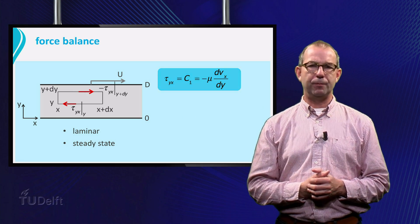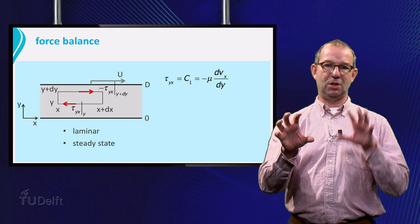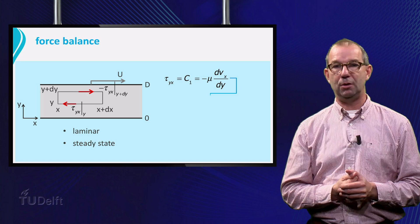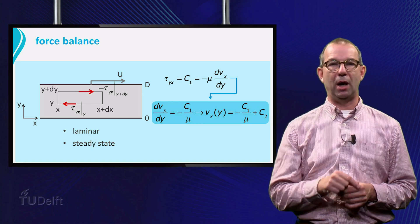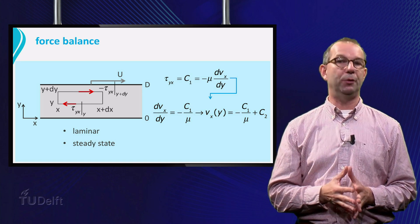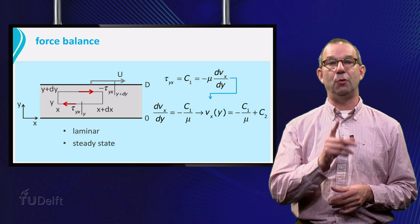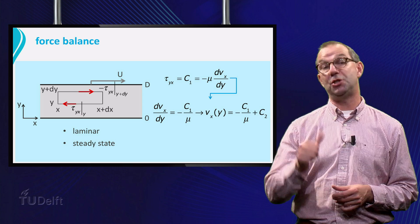So we use Newton's law to connect the shear stress to the velocity. Now we solve the differential equation for the velocity: dVx dy equals minus c1 over mu. The solution is a linear relation of Vx with the y coordinate as shown on the sheet.